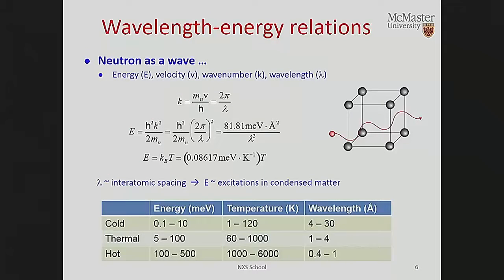From quantum mechanics, everything is a wave — everything can be described as a wave. The neutron can be described as a wave. We know we can describe the neutron with a certain energy and velocity — properties we associate with a particle — but also with wave properties like wave number K and wavelength lambda, related by K = 2π/λ. If we know the mass of the neutron, we can relate the energy to its mass and its wavelength. We can also relate the energy to an effective temperature.